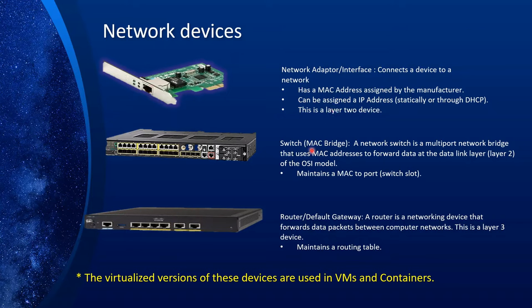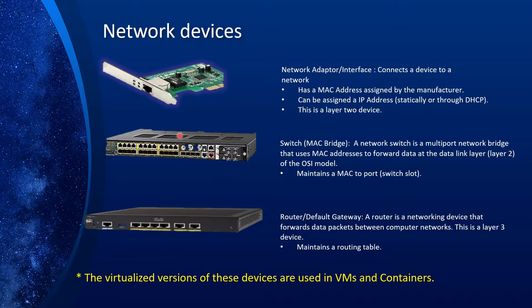Next is a switch, also called a MAC bridge. A network switch is a multiport network bridge that uses MAC addresses to forward data at the data link layer. We are dealing with MAC addresses in this layer. It maintains a MAC-to-port table — for example, the adapter with MAC address A is connected to port one, and so on. When computers want to communicate within the same subnet, everything goes through the switch using MAC addresses. No IP is actually involved because we are using MAC addresses to communicate.